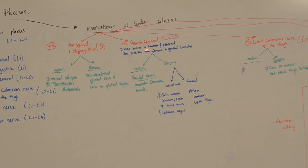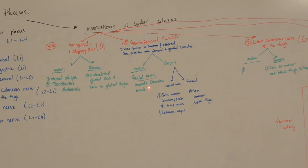For the genitofemoral nerve, L1 and L2, it divides lateral to the common and external iliac arteries into the femoral and genital branches. For the motor part, the genital branch will innervate the cremasteric muscles. For sensory, the genital branch will innervate the skin of the anterior scrotum or the skin of the mons pubis or the labium.